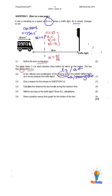He's slowing down against motion. So is the velocity and acceleration of the braking taxi in the same direction as it moves towards the traffic light? The answer would be no. The reason is the velocity of the taxi is to the right, but the taxi is braking, so he has negative acceleration — acceleration is to the left.